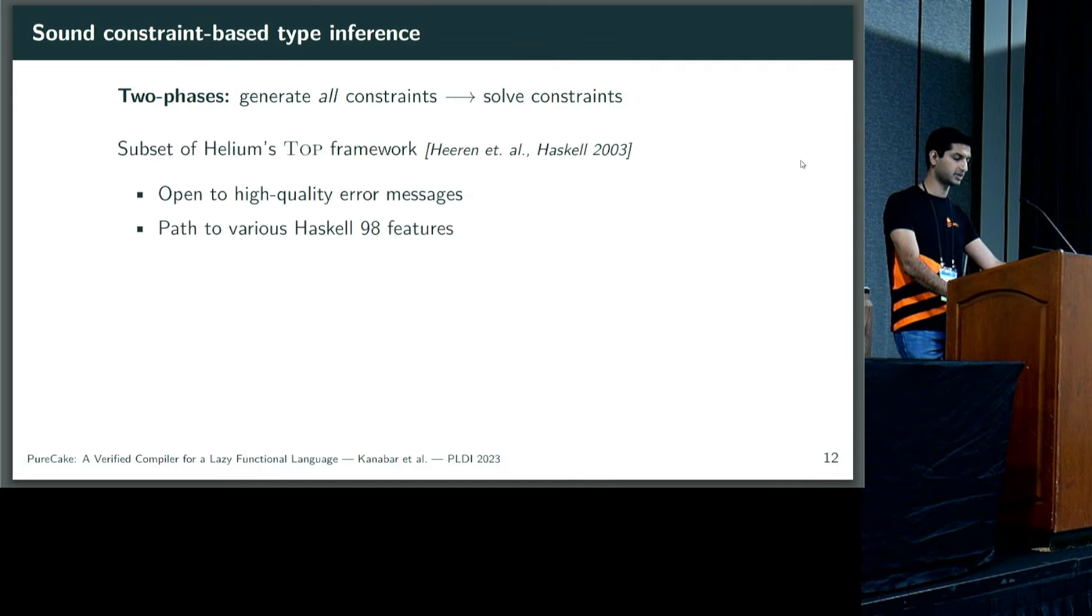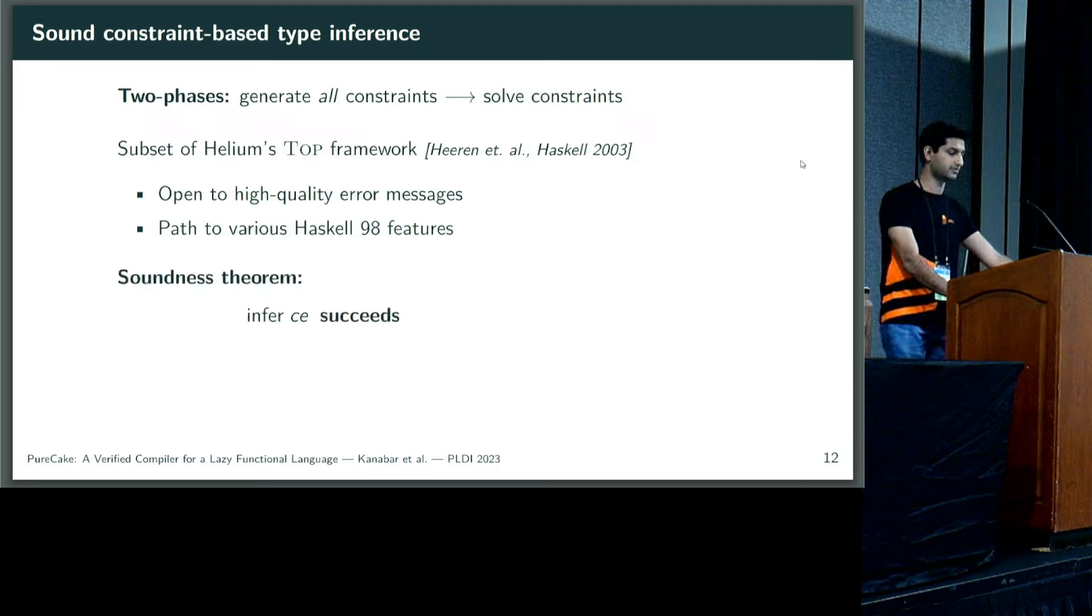We choose to pursue a two-phase constraint-based type inference approach. We generate all typing constraints in a single syntax traversal, and only attempt to solve them later, after the traversal. The approach is taken out of the Helium teaching compiler for Haskell, in particular its top framework. This is designed for very clear, precise error messages, and supports a lot of Haskell 98. The idea is that in the future, PureCake can do the same. We prove that if inference succeeds, it must be the case we can generate some constraints according to the top typing framework, which are in fact solvable, and overall these imply well typing.